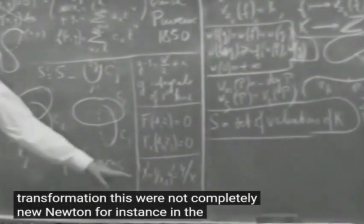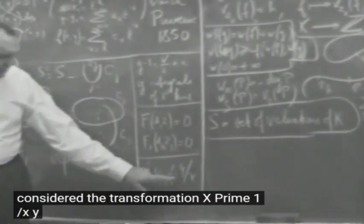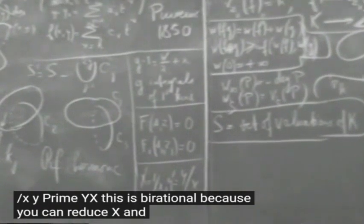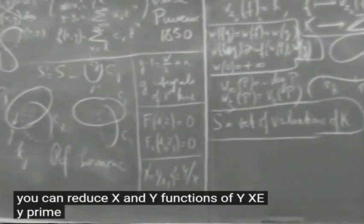Newton, for instance, in the plane had considered the transformation x prime equals one over x, y prime equals y over x. This is birational because you can reduce x and y function of x prime, y prime.